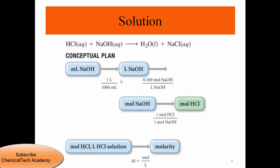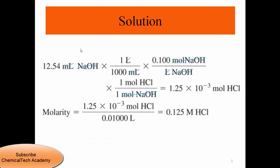We convert the 12.54 mL of NaOH to liters using the conversion factor, then multiply by the concentration to find the number of moles of NaOH. Based on the neutralization reaction, for each mole of sodium hydroxide we need one mole of acid — a 1:1 ratio. Volume times concentration gives us the number of moles of base.